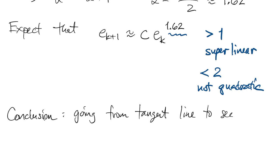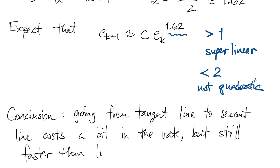So the tangent line, in some sense, was better. The secant line costs us a bit in the convergence department. But the most important thing is that it's superlinear.